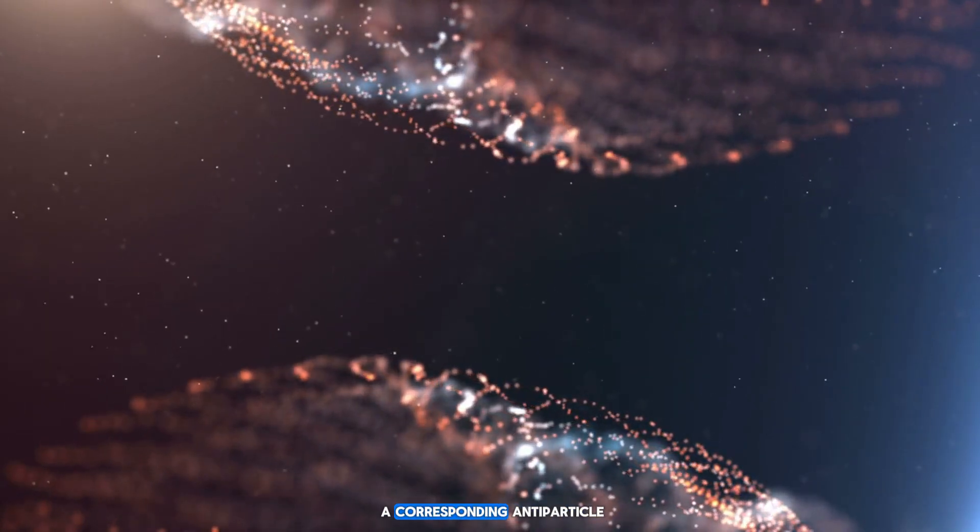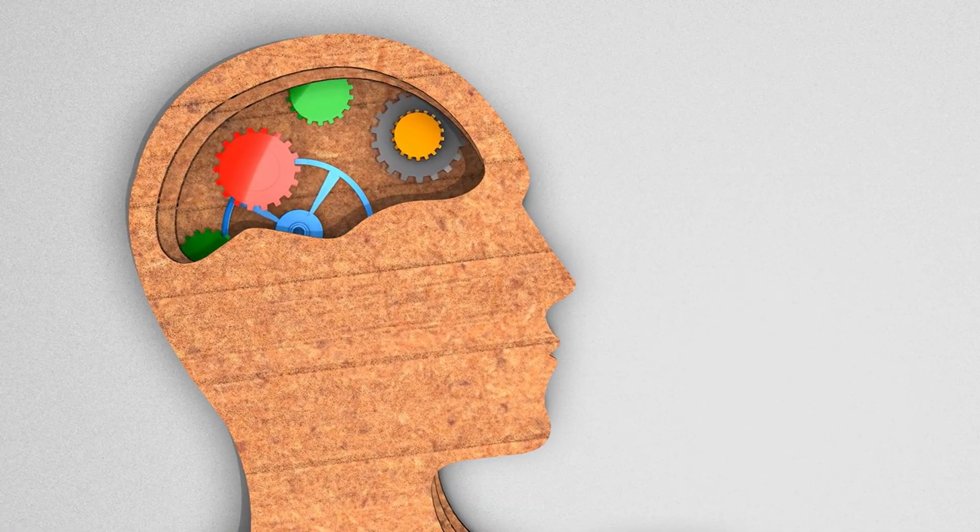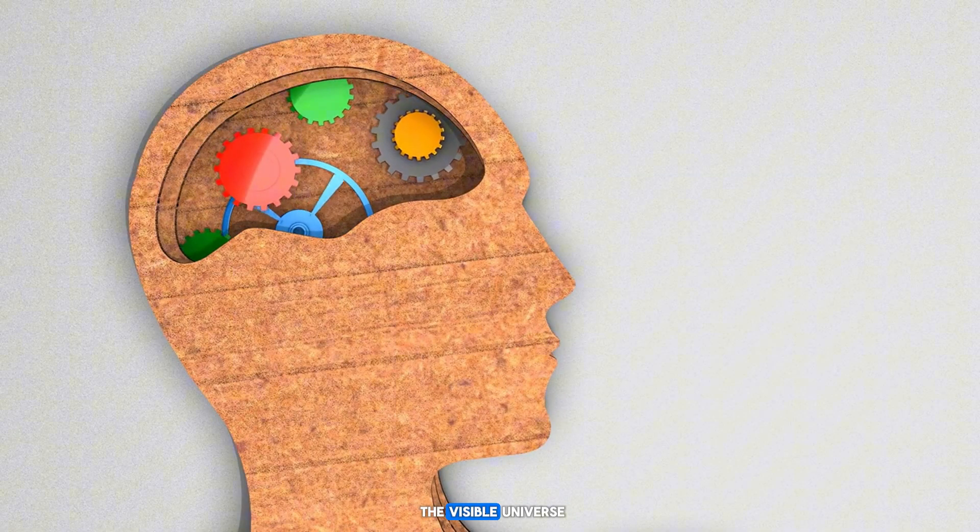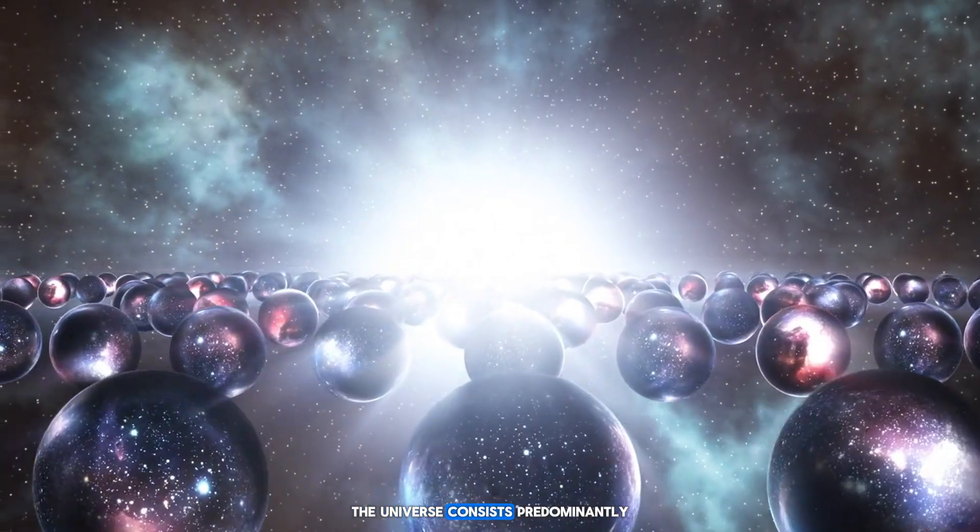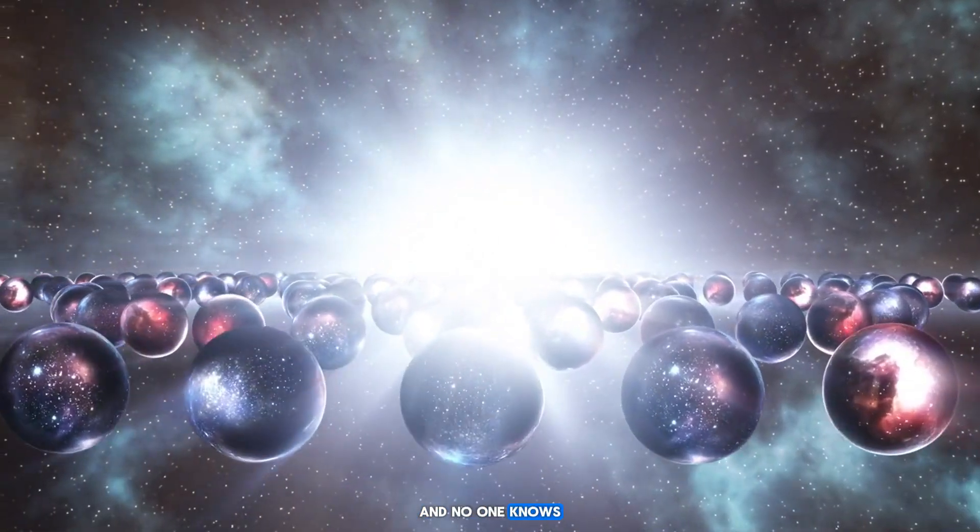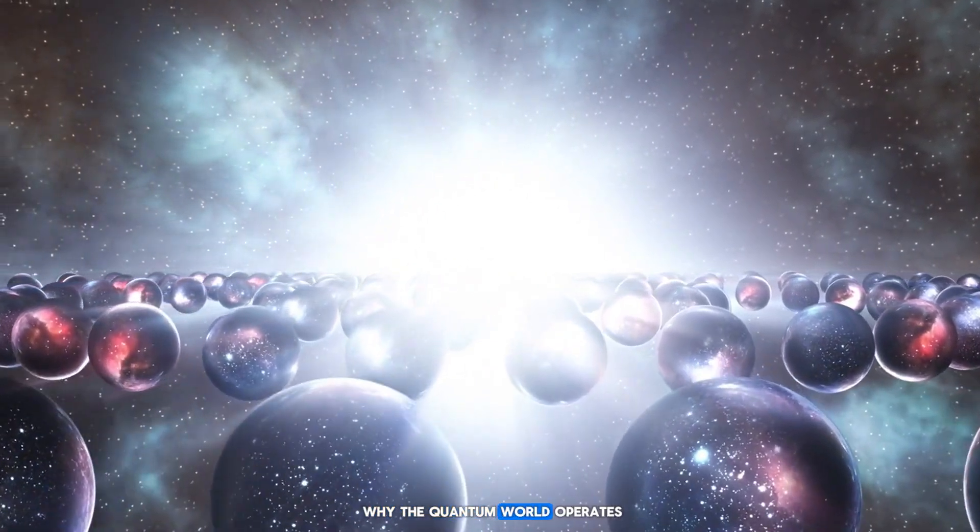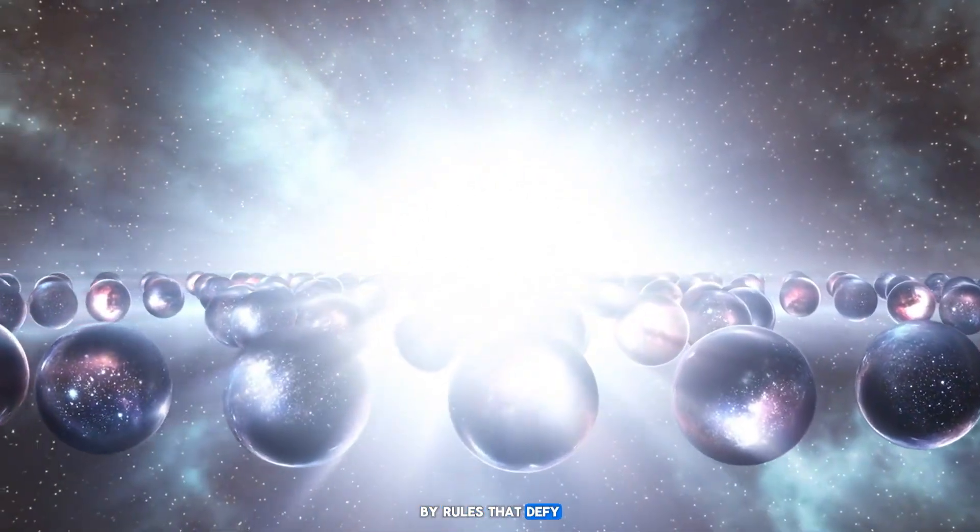Almost every particle has a corresponding antiparticle of the same mass but opposite charge. Antimatter is rare in the visible universe and mainly appears in particle collisions. The universe consists predominantly of matter, and no one knows why.